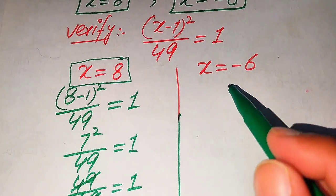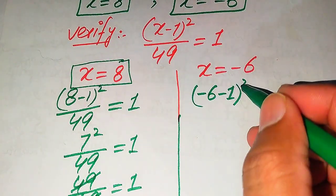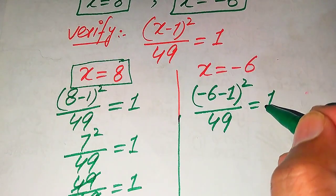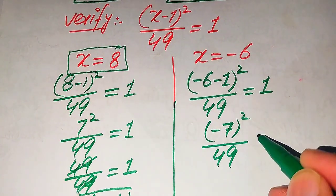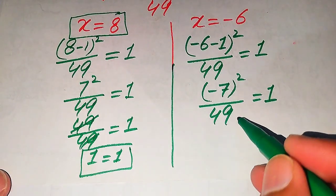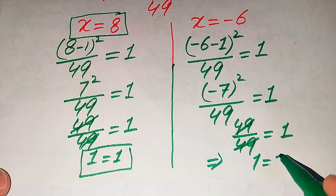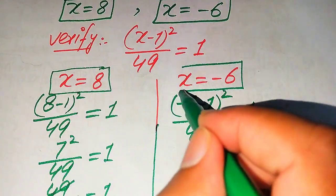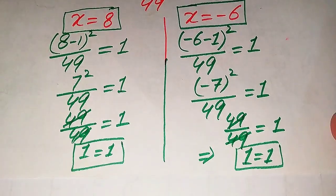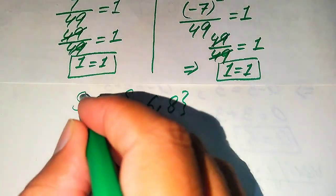For the second value, we substitute x equals minus 6 into the left hand side. It becomes (minus 6 minus 1) whole square divided by 49 equals 1. Minus 6 minus 1 becomes minus 7, so (minus 7) squared divided by 49 equals 1, giving 49 divided by 49 equals 1. Both sides are equal, so x equals minus 6 also satisfies the equation. Both values — minus 6 and 8 — are solutions.